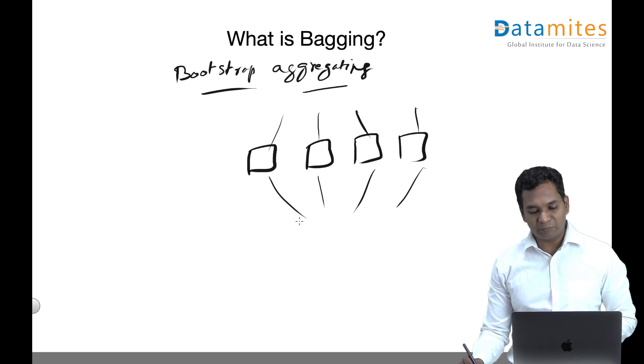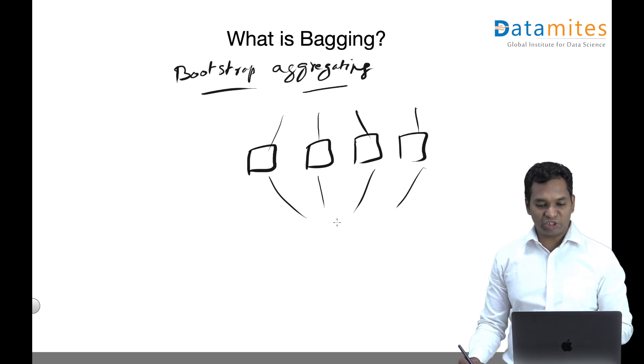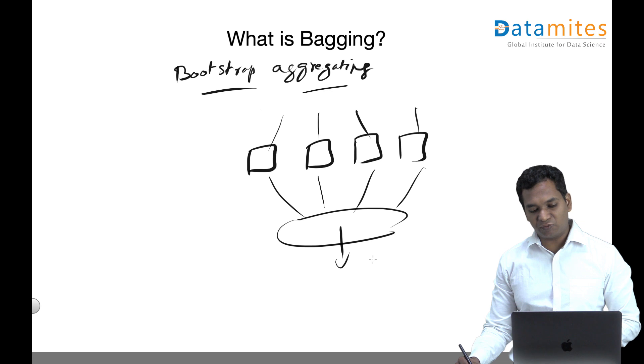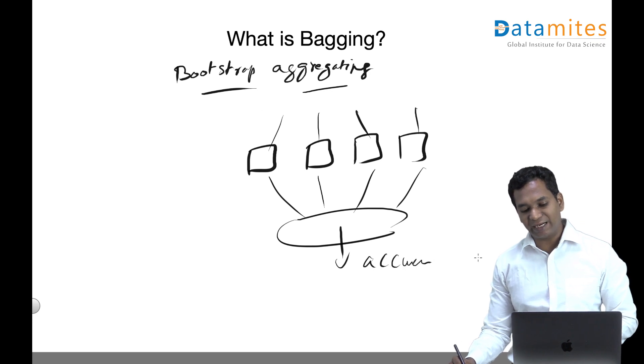Based on the problem type, if you're doing classification, we take a majority vote. If you're looking at regression, we take an average. We combine them and the resultant accuracy is higher than individual models. This is the idea of bagging.